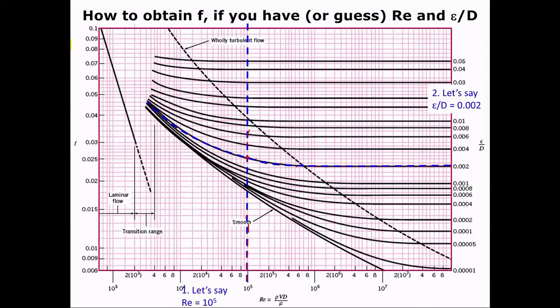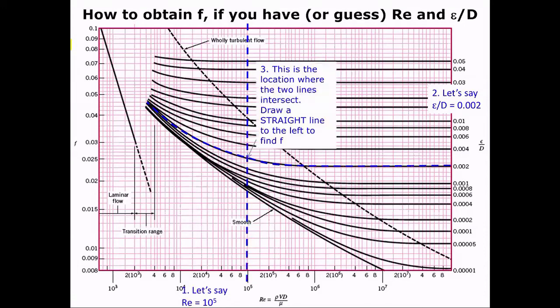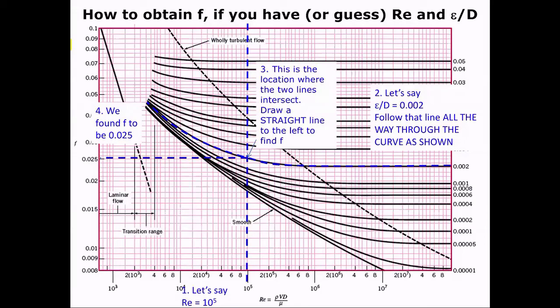Now, where those two points intersect, what I want you to do is draw a straight line to the left and find your friction factor. So if you draw a straight line to the left, you found that it is approximately 0.025. That's how you would read the Moody diagram. Pretty easy, right?